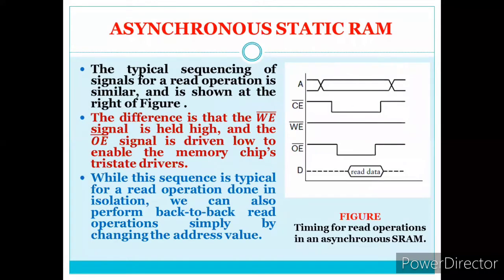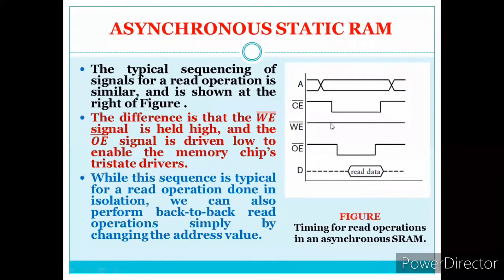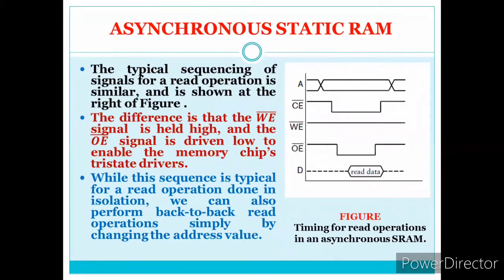Now let's look at the read operation. Chip enable is the same, but write enable must be inactive (active high) and output enable must be active low. When these two conditions are met, the stored data is read. The output driver comes out of the high-impedance state and the data stored at the addressed memory location is driven to the output.